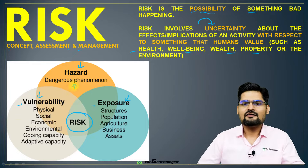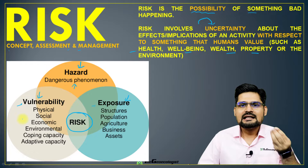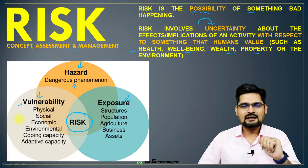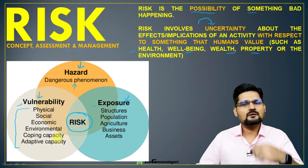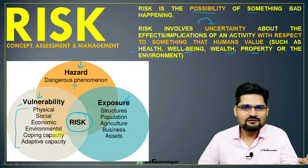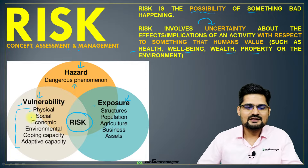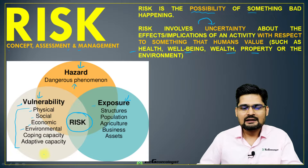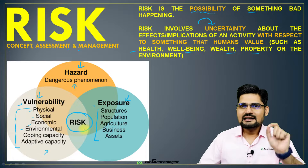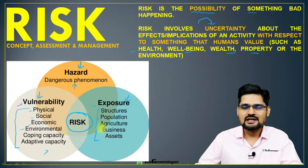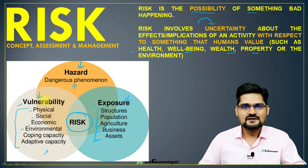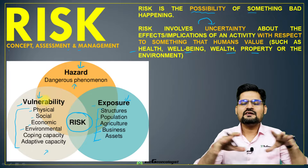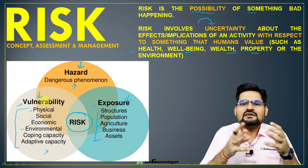Hazard is basically something that can affect and has a dangerous position for human beings — a dangerous phenomenon. Vulnerability has many components including physical, social, economic, and environmental aspects, which we'll cover in a dedicated video. Exposure includes human structures, population, agriculture, business, assets and many other parameters of human society. Together, when we overlap them, we get the concept of risk.